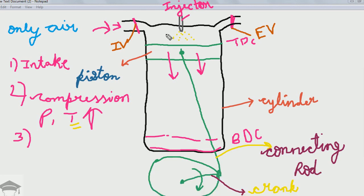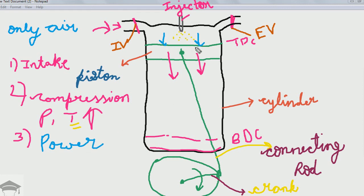We obtain useful power in this stroke. The piston travels from top dead center to bottom dead center very fast. This stroke is the fastest among the four strokes. The piston comes from TDC to BDC.